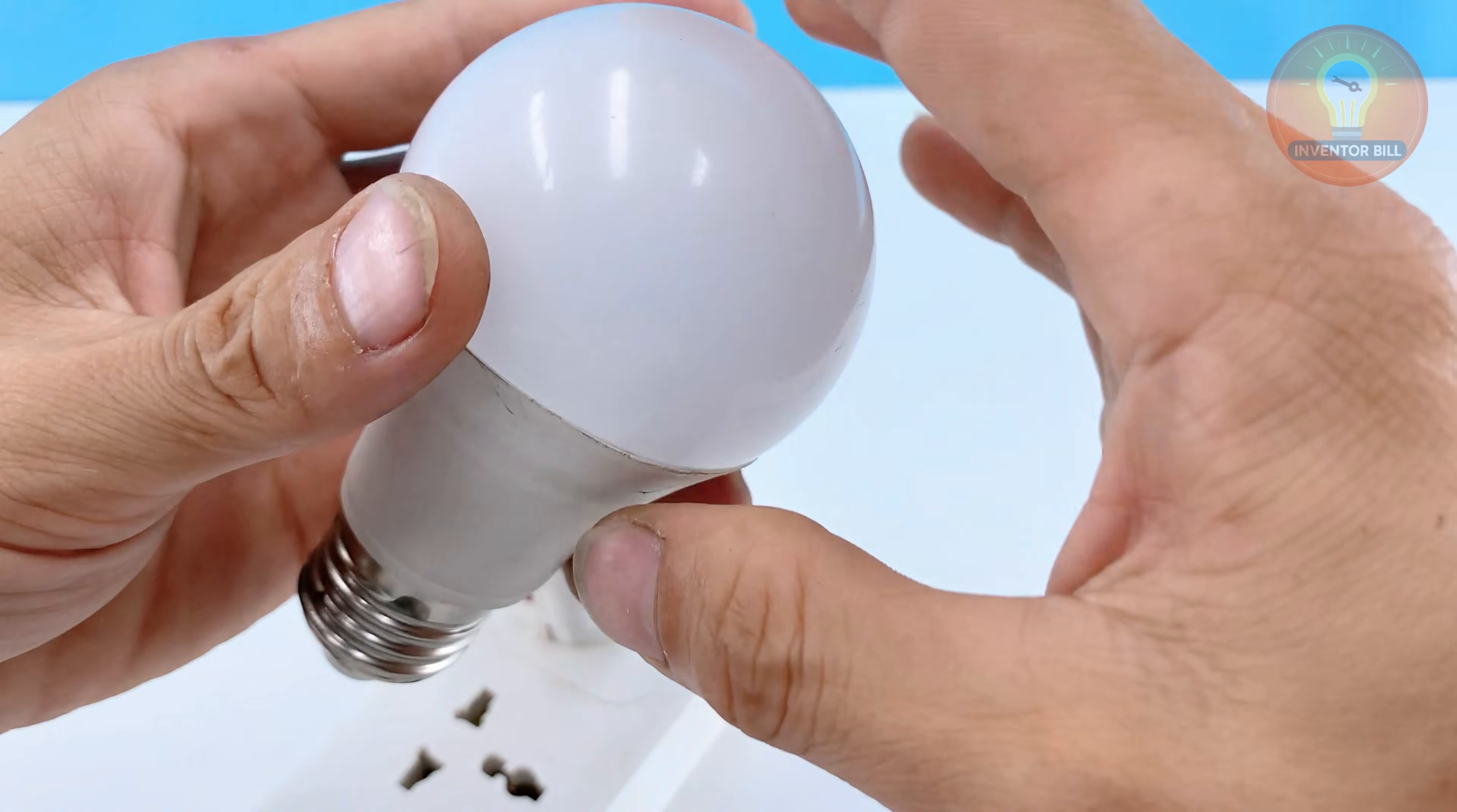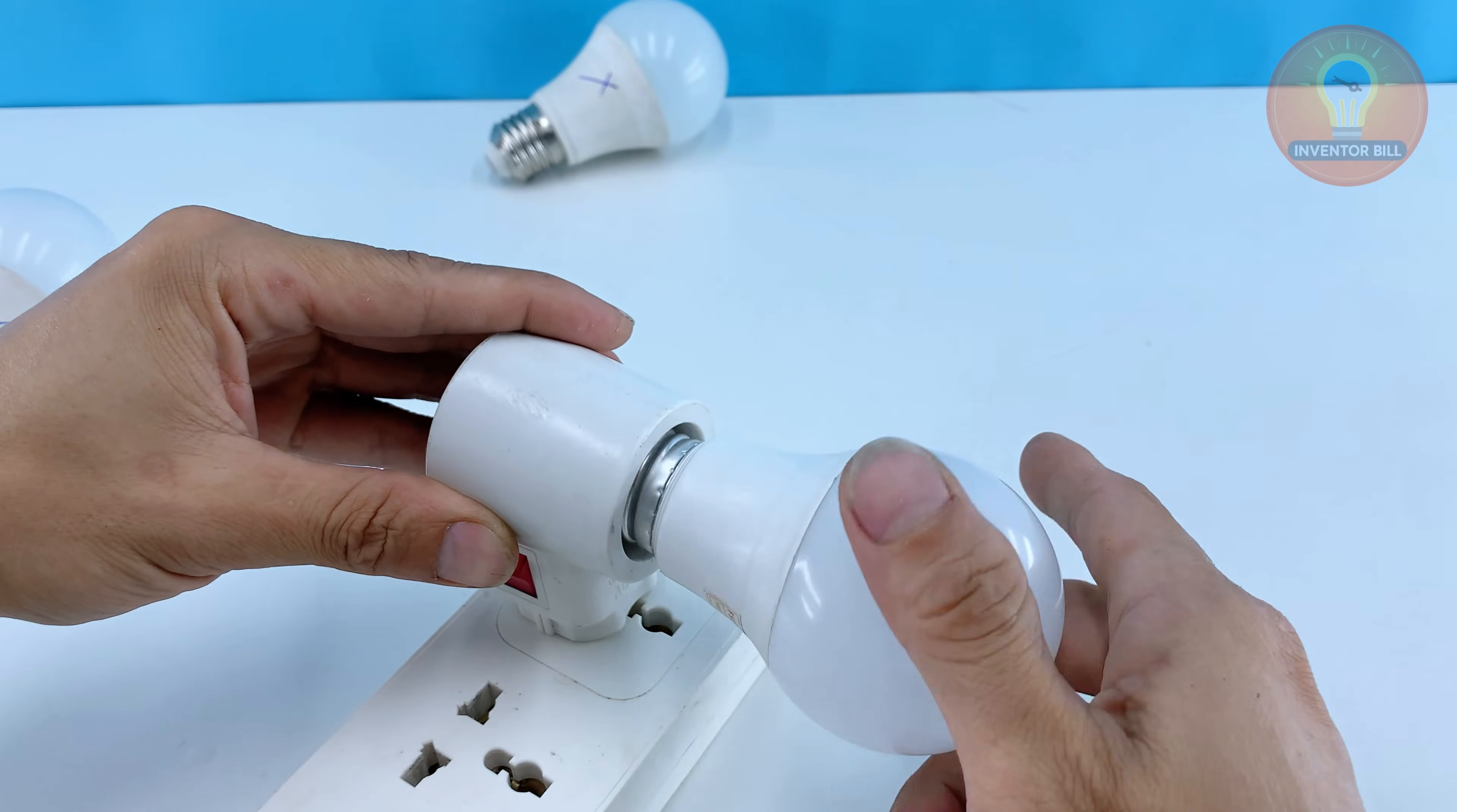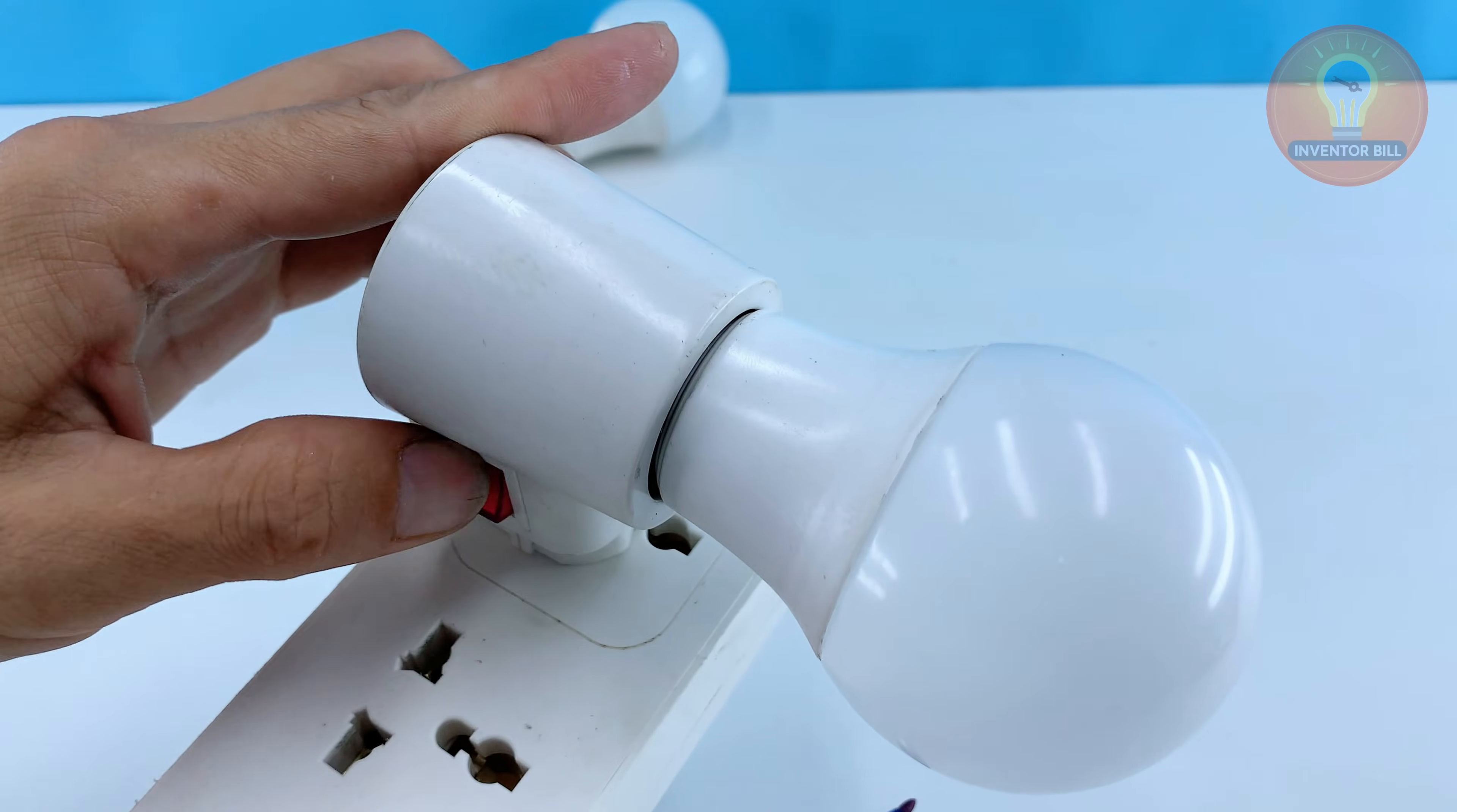But something felt off. The base looked fine, the wiring looked fine and I kept thinking there had to be a way to bring it back. So I pulled out a small screwdriver, opened the cover and took a closer look at the LED board inside. That was the moment I realized the bulb might not be dead at all.